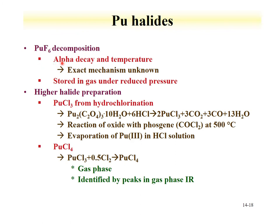Plutonium hexafluoride can undergo decomposition from alpha decay and temperature. The exact mechanism is unknown, but this indicates that the stability of the hexafluoride depends upon storage and the isotope used. Generally it would be stored under reduced gas pressure. Higher halide preparation has also been performed for chlorides. The trichloride can be obtained from plutonium-3 oxalate with HCl, from the reaction of oxide with phosgene, or by simple evaporation of plutonium-3 in HCl solution. The tetrachloride can be made by treating the trichloride with chlorine gas.